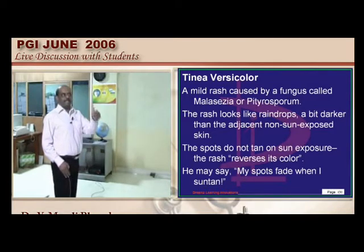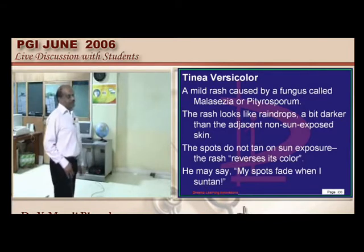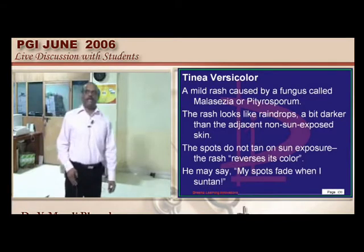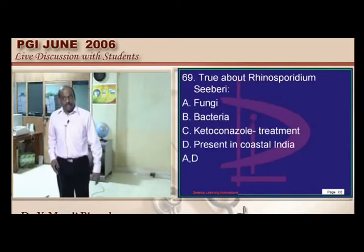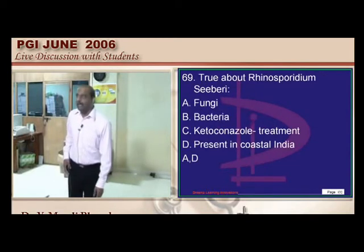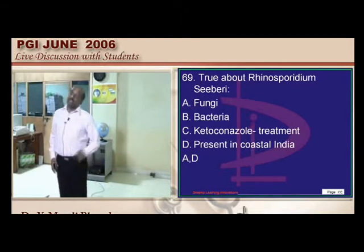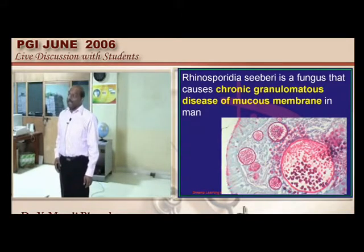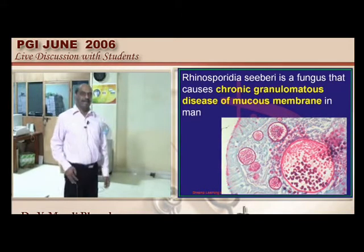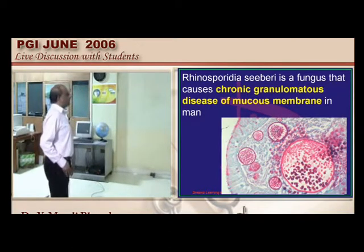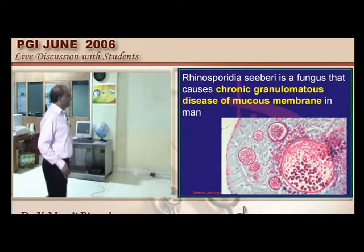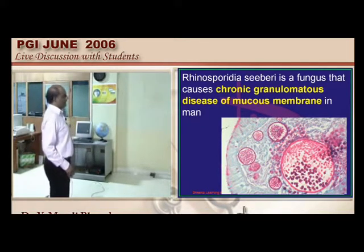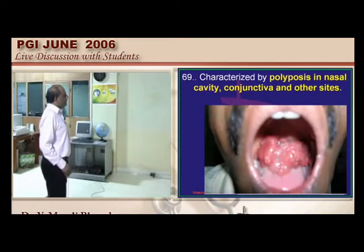Rhinosporidium seeberi is found in India, particularly South India, in endemic fashion. Dapsone, the anti-leprosy drug, is also used for rhinosporidium. It causes chronic granulomatous disease with multiple spores visible, and can cause polyposis in the nasal cavity, conjunctiva, and oral cavity.